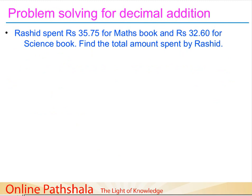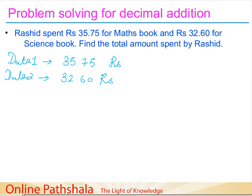Now let's solve a word problem. Rasheed spent rupees 35.75 for a maths book and rupees 32.60 for a science book. Find the total amount spent by Rasheed. First, write the data: Data 1 is 35.75 rupees for the maths book, and Data 2 is 32.60 rupees for the science book. We need to find the total amount spent, so we add these two numbers.